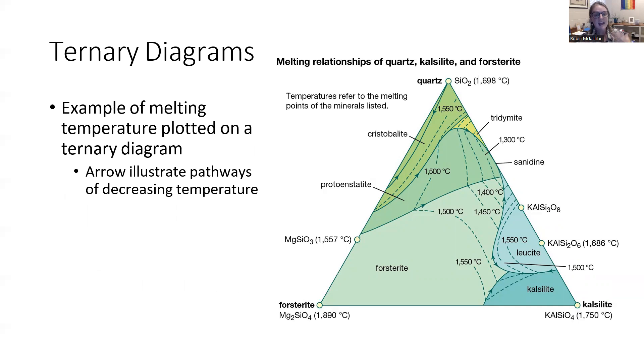So it's saying that if the magma is 1400 degrees Celsius, these are all the possible compositions that could exist. So if it's 1400 degrees Celsius, you're never going to get 100% forsterite, it won't happen. This ternary diagram is showing you that.